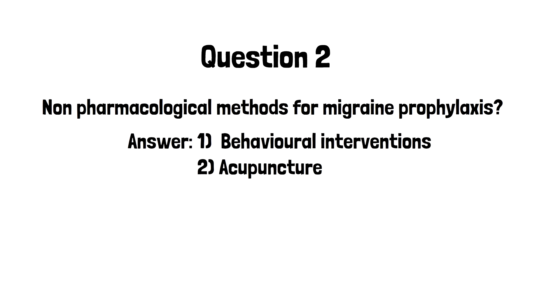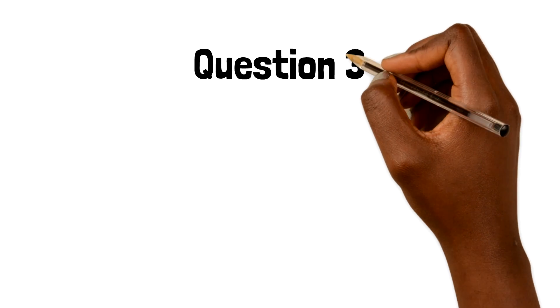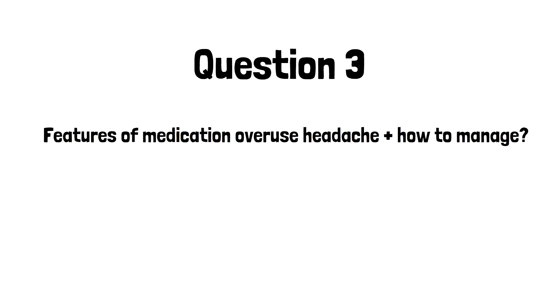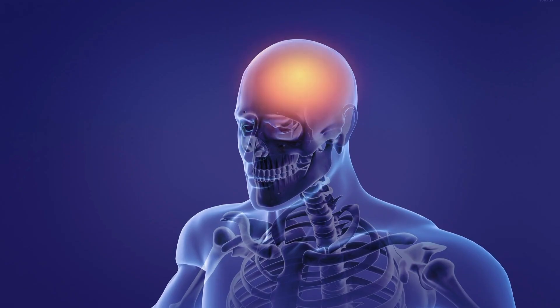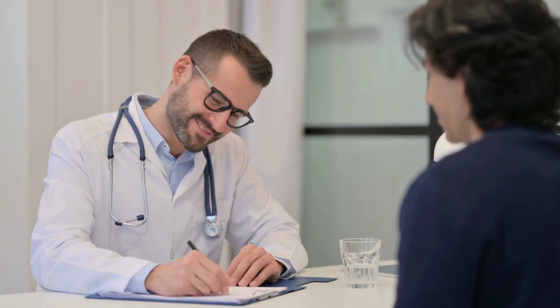We mentioned earlier that this patient has been taking over-the-counter co-codamol to manage her headaches. Question three: what features of her history will cause us to be worried about medication overuse headache being the cause of her symptoms, and how will we manage this? Typically with medication overuse headaches, we see headaches present for 15 days or more per month, associated with overuse of analgesic medications. We need to advise these patients to withdraw the medication for at least a month, after which the headache will gradually improve. During this period, headaches might get slightly worse before they eventually get better.